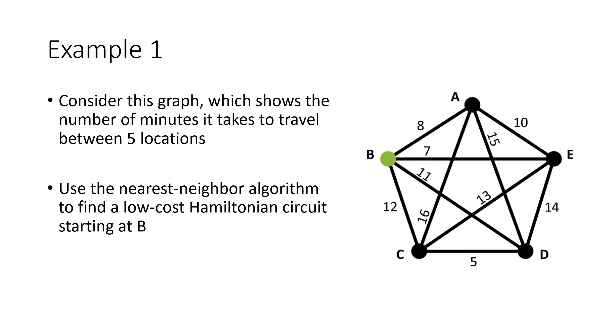So starting at B, what we do is we look at the distances, or in this case the times, from B to the other vertices. So it's eight minutes from B to A, seven minutes from B to E, 11 minutes from B to D, 12 minutes from B to C, and we pick out the lowest number. In this case that's seven. So that means we're going to travel along this edge from B to E, and now we're at E.